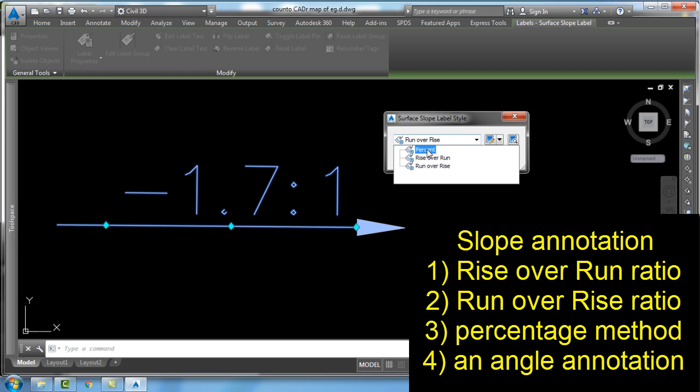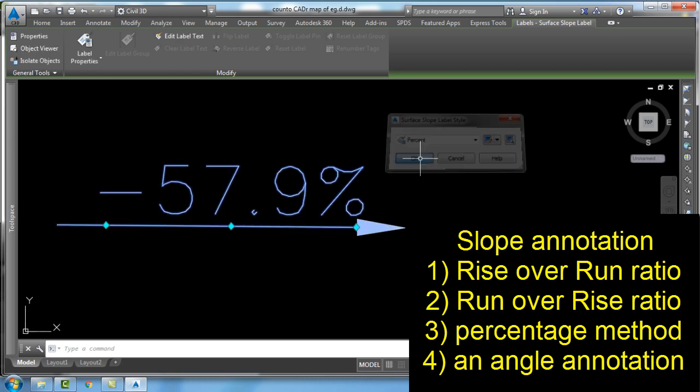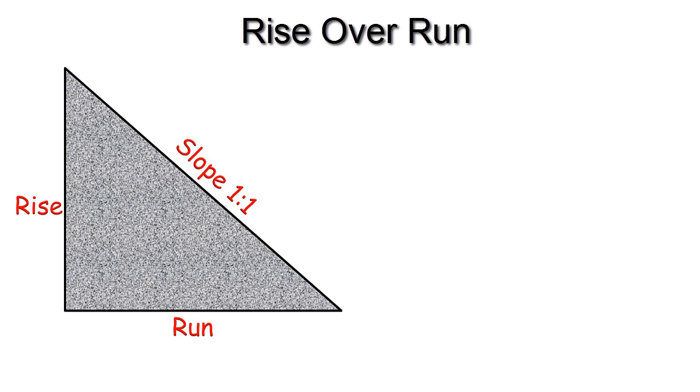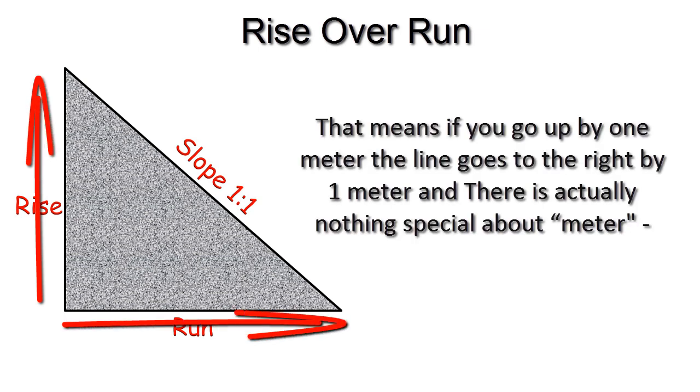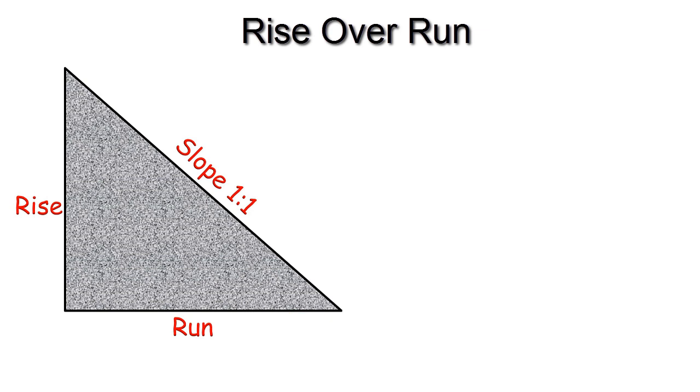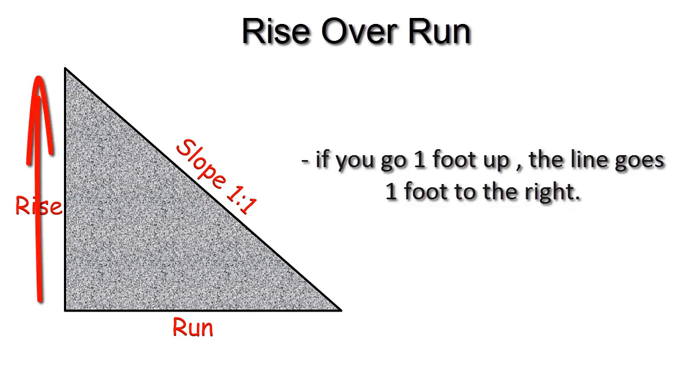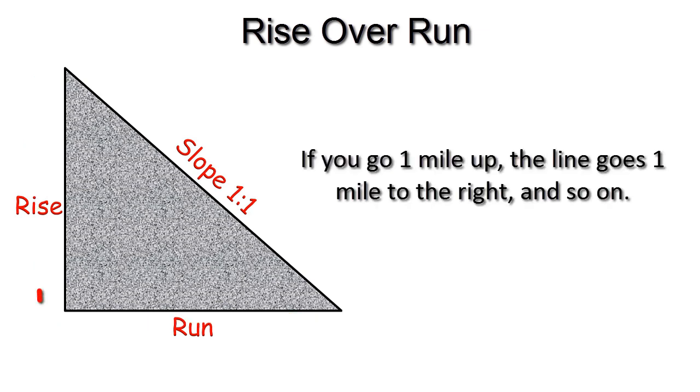The third way is by slope percentage. The fourth way is by angle between 0 and 90 degrees. For example, let's take the rise and run ratio. If the slope is 1:1, what does that mean? It means if you go up by one meter, the line goes to the right by one meter. There's nothing special about meters—if you go one foot up, the line goes one foot to the right.